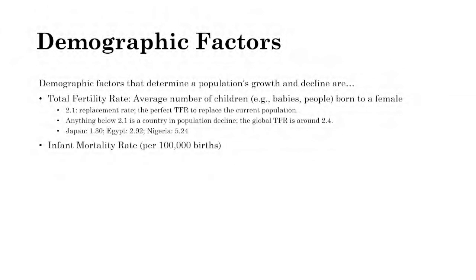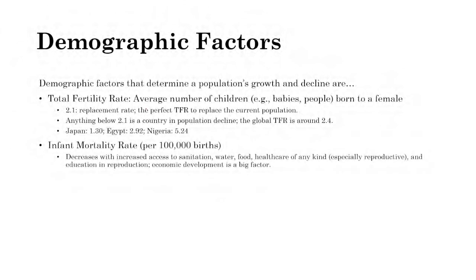Infant mortality rate is the number of infants that die per 100,000 births. As time goes on and as countries develop, this measurement decreases. Infant mortality rate in developed countries is smaller than in undeveloped countries, decreasing because of increased access to sanitation, water, food, and healthcare of any kind, especially reproductive healthcare.